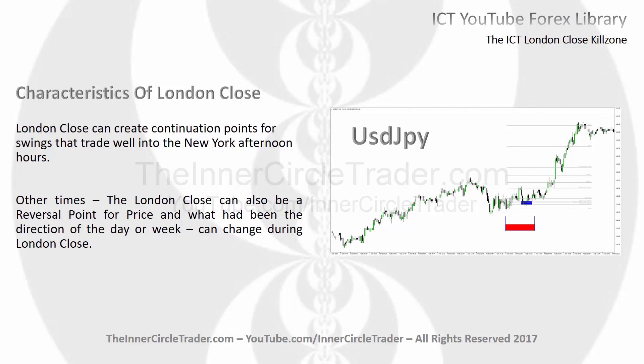Characteristics of London Close: the London Close can create continuation points for swings that trade well into New York afternoon hours. That means if we're bullish overall in the day, instead of creating the high of the day, many times the London Close can actually create a continuation pattern — as seen in this example on Dollar Yen. The market had traded higher initially during the day, then we had a consolidation, but inside the consolidation we had an optimal trade entry. Whenever we're studying London Close you have to be looking at it from a five-minute chart — anything higher than that you're not going to get the detail you need.